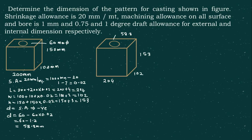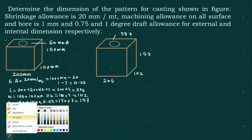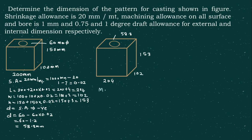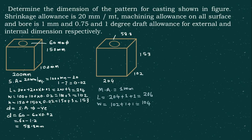Now let's consider the machining allowance. The machining allowance is 1 mm on all surfaces including the bore. The new dimensions considering machining allowance will be: length is 204 plus 1 mm on each side, coming out to 206. Similarly, width is 102 plus 1 mm on either side, coming out to 104.